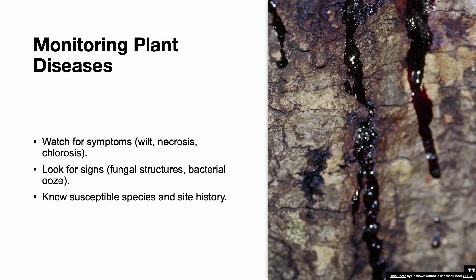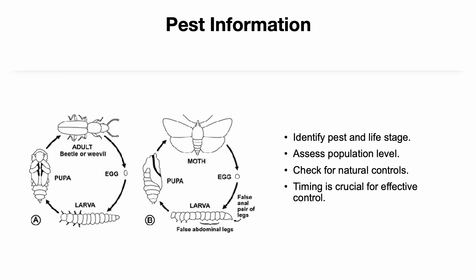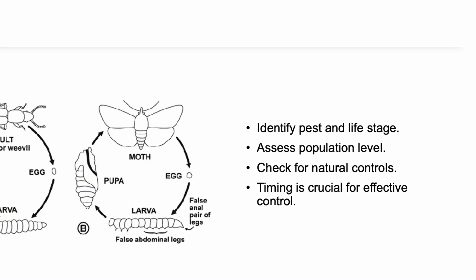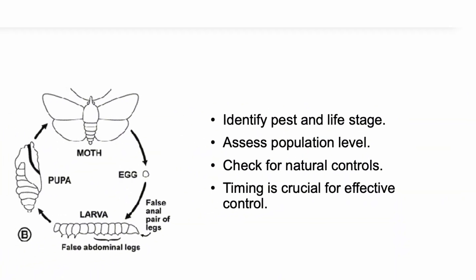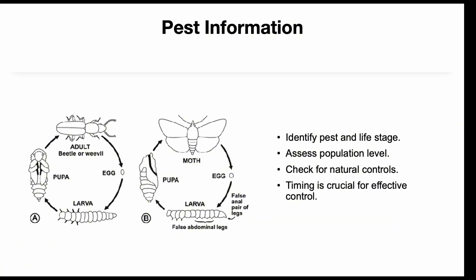Diseases are often harder to catch early, so we stay alert for both symptoms and signs. Symptoms might include wilting, necrosis, or chlorosis. Signs include visible fungal structures or bacterial ooze. It helps to know which species are disease-prone and to review the site's disease history. When pests are present, we identify the species and life stage, assess how many are present, and check whether natural predators are helping keep them in check. Correct timing is everything — some pests are only vulnerable during certain life stages. The more accurate our monitoring, the better our treatment outcomes.